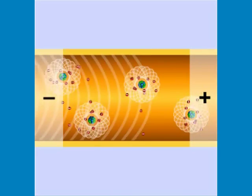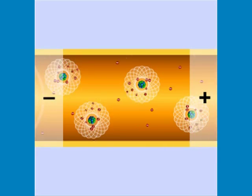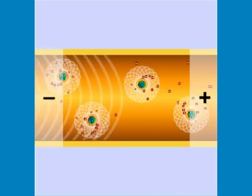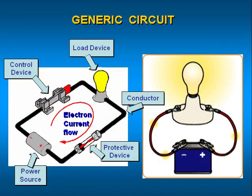Electrons flow from the negative terminal on the power source through the circuit and back to the positive terminal. There is also a conventional current flow convention where current flows from the positive terminal of a power source through the circuit to the negative terminal.